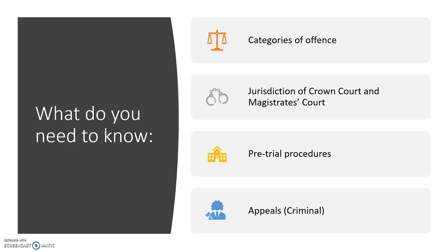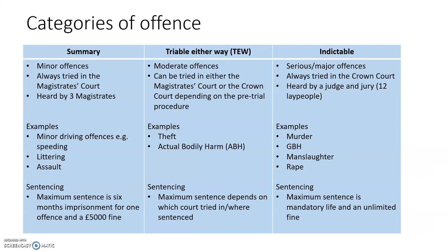We're going to start with categories of offence. All crimes and offences in this country can be divided into three categories: summary, triable either way, and indictable. Note it's spelt 'indictable' but pronounced 'indictable'. Triable either way can quite often be written as shorthand as TEW.